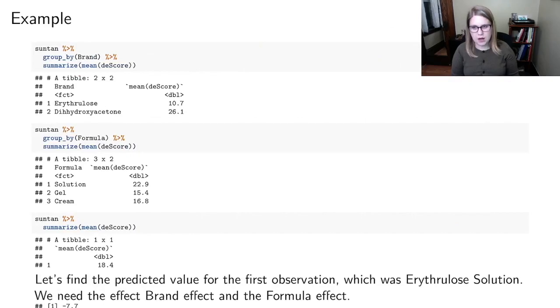So I've done a bunch of summary statistics here. So I've taken my suntan data set, I've grouped by brand, and I found the means in that response variable for each of the two groups. And then I did the same thing for formula. So I got the means for each of the three different ways that it could be applied. And then I didn't use a group by all, and I just got the overall mean of that d score variable.